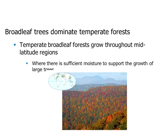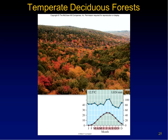Now we're going to look at the broadleaf temperate forests. Temperate broadleaf forests grow throughout the mid-latitude regions, just like the prairies, but where there's sufficient moisture to support the growth of large trees. So they tend to occur in the more rainy or eastern sides of the great grassland prairies. Temperate deciduous forests have year-round precipitation, but winters that are really cold, near or below freezing.